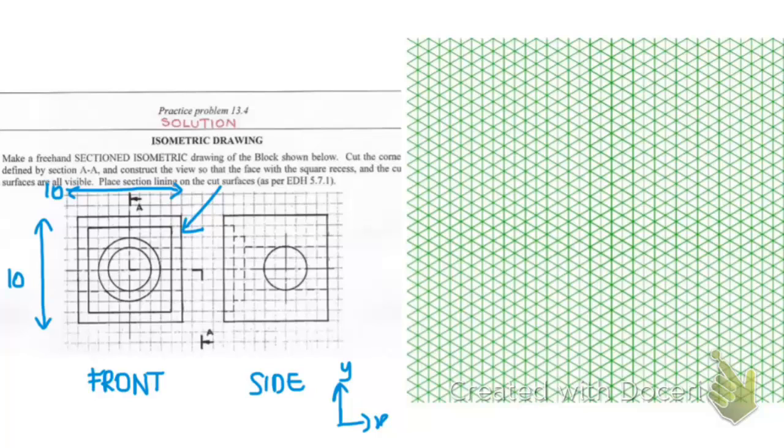So first of all we are going to construct the cuboid that is going to envelop our block. So we have a 10 by 10 front face and a width of 10 boxes. So let's pick a point from which to start drawing. I'll choose this point and name it C.